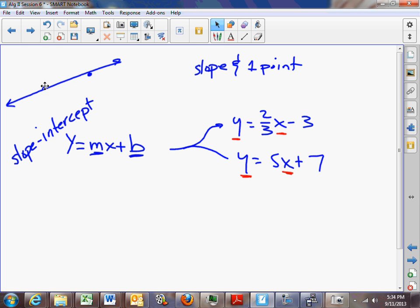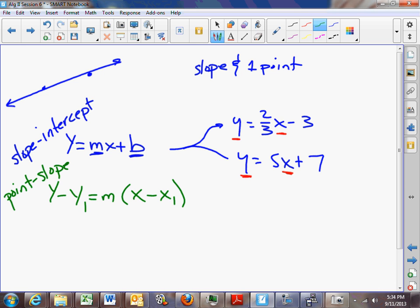Another general form for the equation of the line would be y minus y1 equals m times the quantity x minus x1. This form has been called point-slope form, and basically, you would use this when you have a point and the slope and you want the equation of the line.